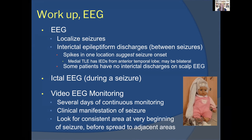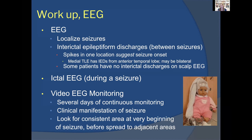An ictal EEG captures activity during a seizure and can be very helpful in showing where seizures start — it may not pinpoint a small area but can identify a region. Video EEG monitoring keeps patients in the hospital for a couple of days to capture multiple seizures on video, so you can correlate the body's movements with the EEG onset, looking for a consistent seizure-onset zone before the activity spreads elsewhere in the brain.